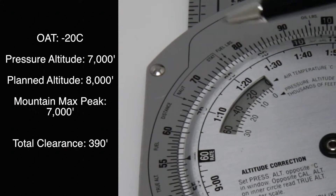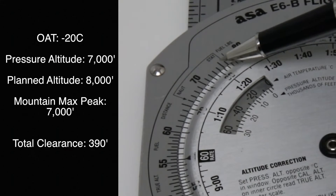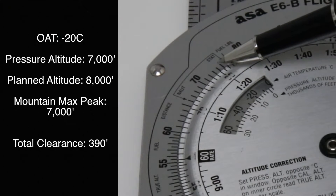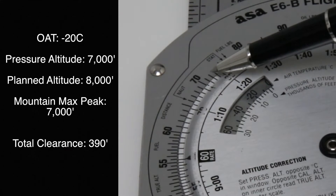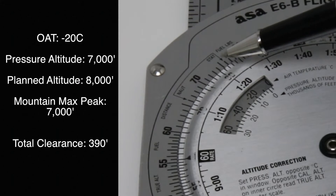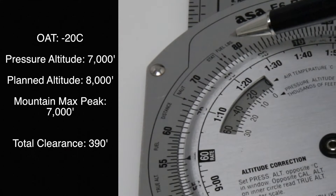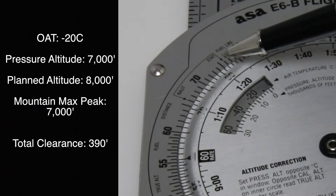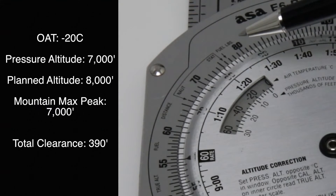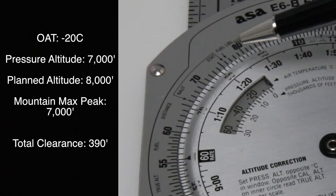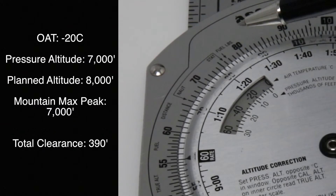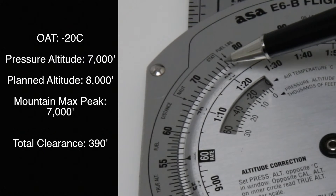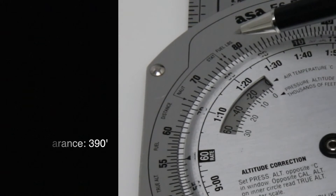So if we go on top of the 8,000 on the outer scale, we have 7,390 feet. In reality, we're only going to clear that mountain by 390 feet. Unless we do this calculation, we would never know this. We would assume we're flying at 8,000 feet and never know that we're only clearing that mountain by 390 feet.